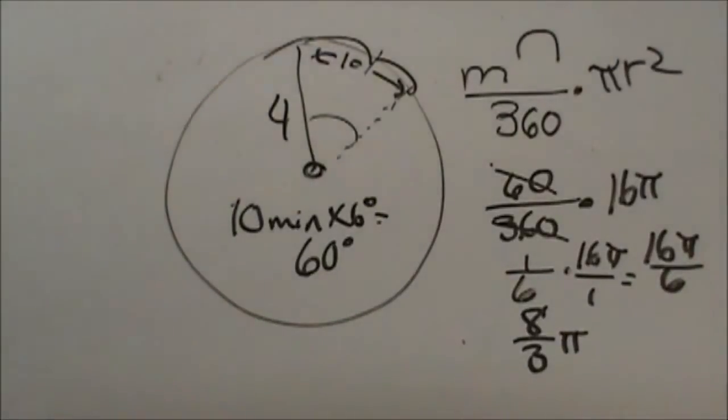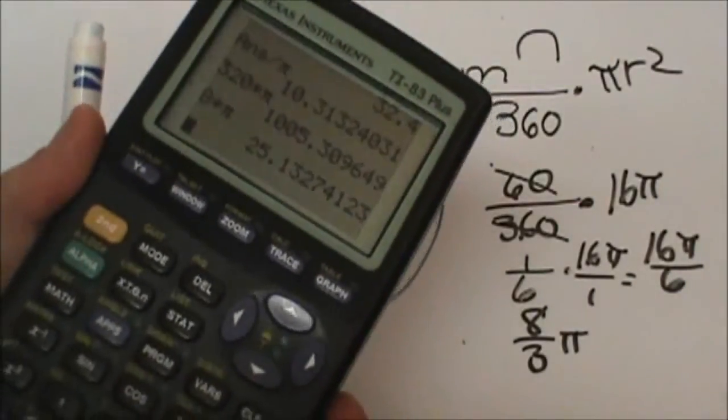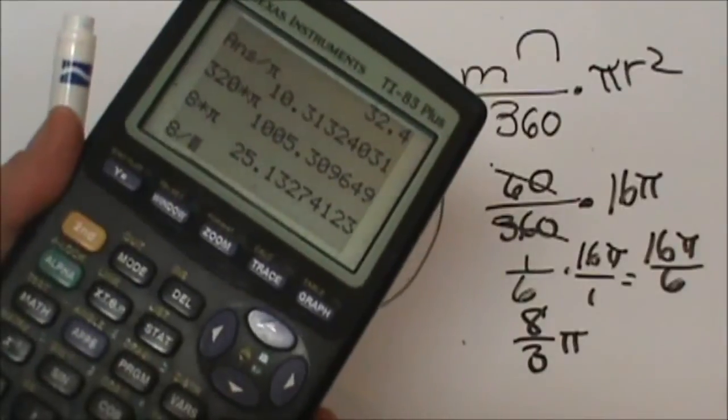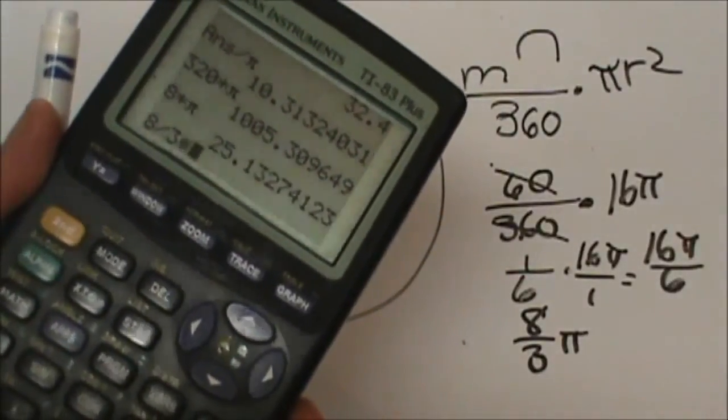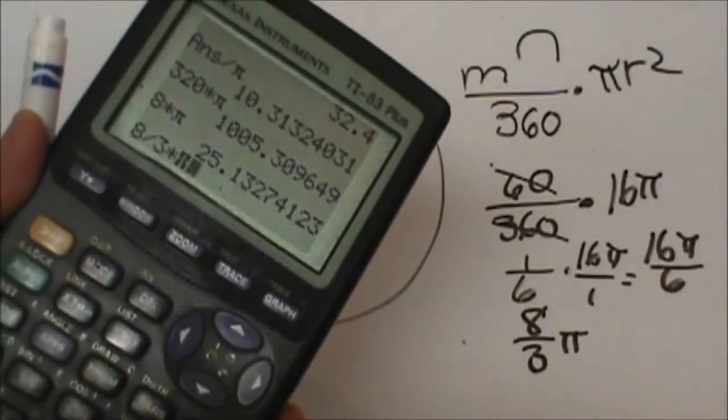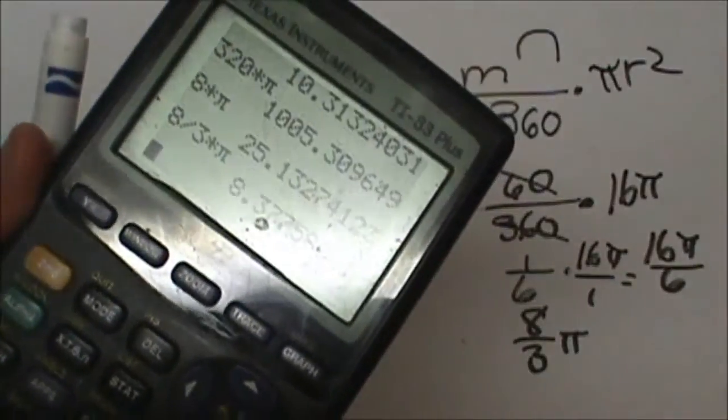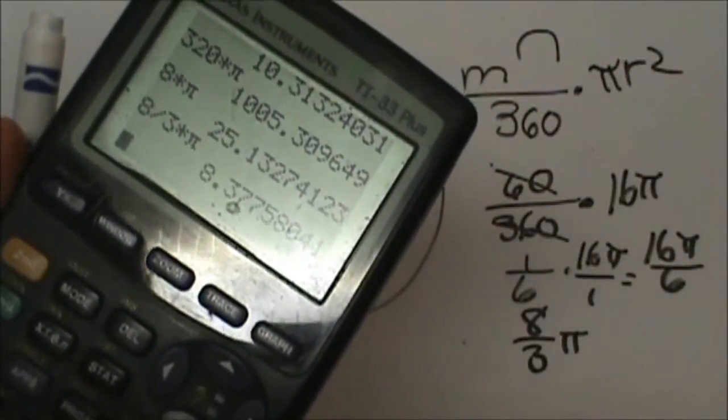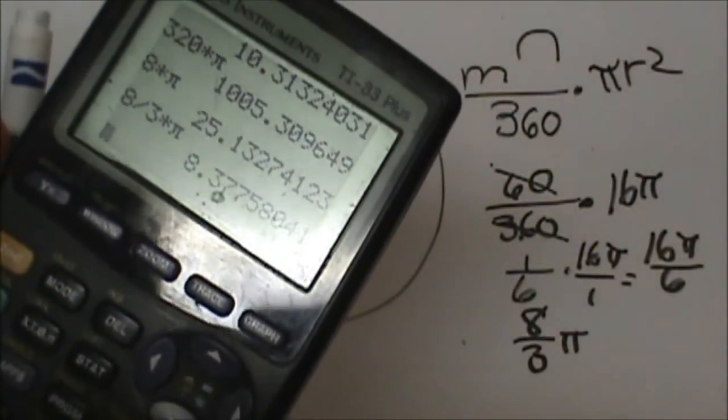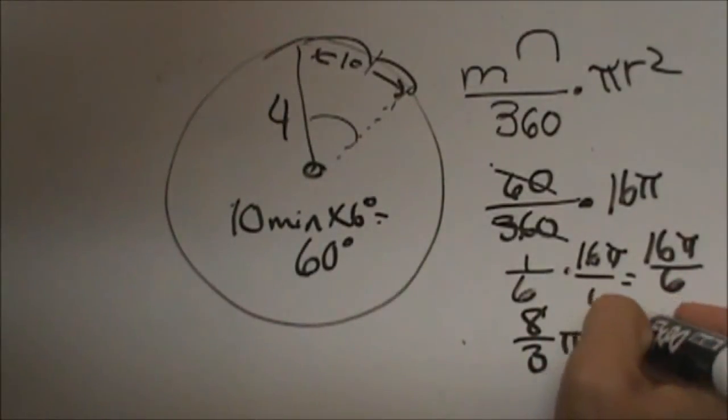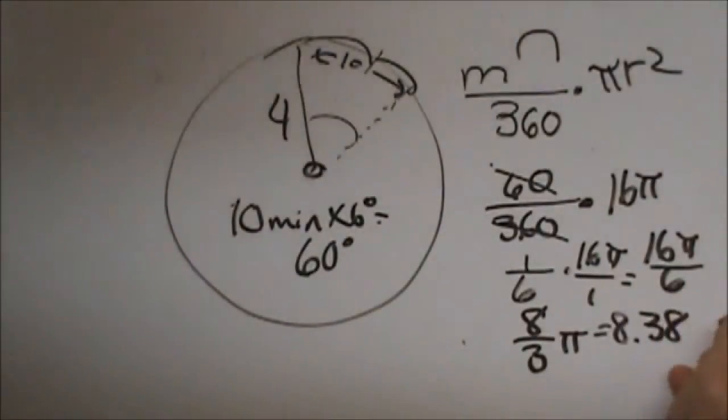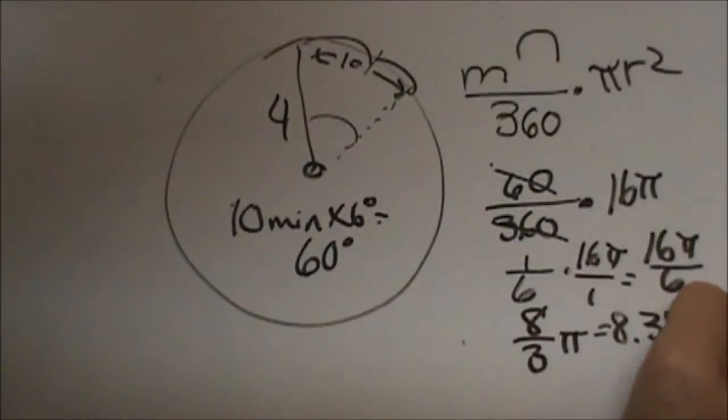If you need to put that into decimal form we take 8 divided by 3 times 2nd function carat to get the π and it gives us 8.377 or 8.38 if we round to the closest hundredths. And that is going to be in what unit is that? Inches. Inches squared. Areas always squared.